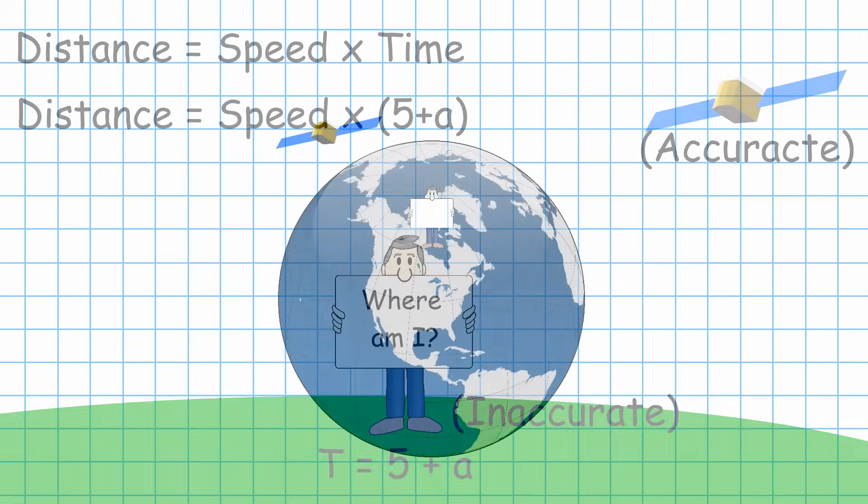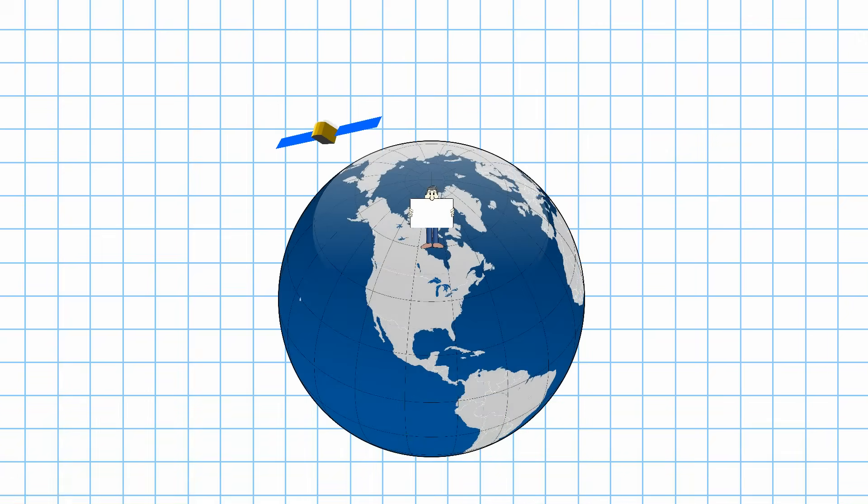With the additional unknown, it's no longer possible to find our position using only two satellites. Two satellites worked when we needed two unknowns, our x and our y coordinate. Now that we have three unknowns, x, y and alpha, we need three satellites to solve the required equations.